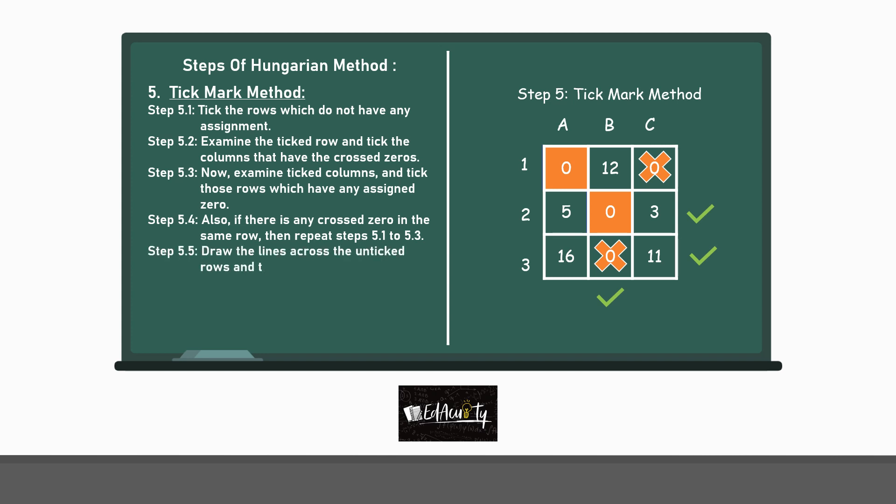Step 5.5. Draw the lines across the unticked rows and the ticked columns. So, this is how it goes. And here, the tick marking method comes to an end.